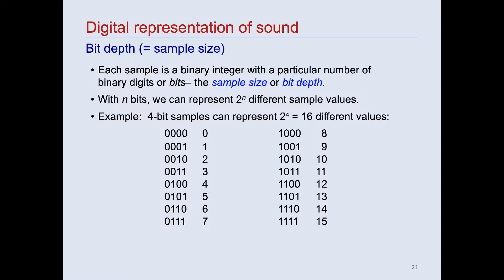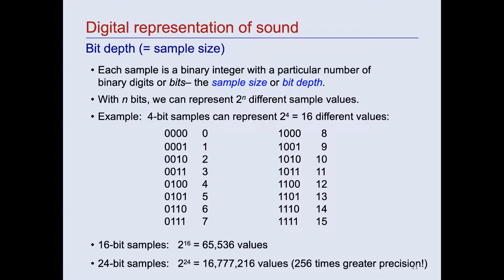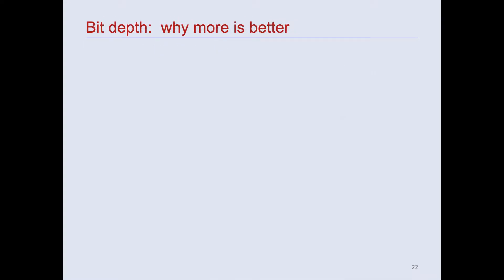Today, the most commonly used sample sizes for audio recording are 16 bits and 24 bits. A few recorders also offer 32-bit samples. 16-bit samples provide over 65,000 discrete possible sample values. 24-bit samples provide more than 16 million values.